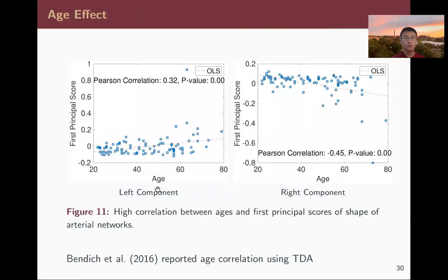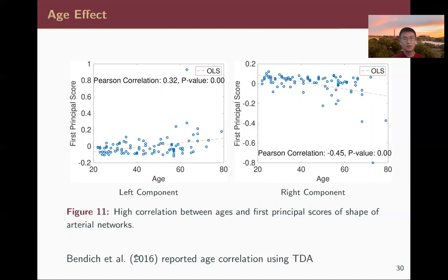However, we do observe a very strong aging effect. We project onto the first principal score and create a scatter plot against age, observing a very strong linear correlation between age and the first principal score with a highly significant p-value. We obtain the same result using topological data analysis (TDA).